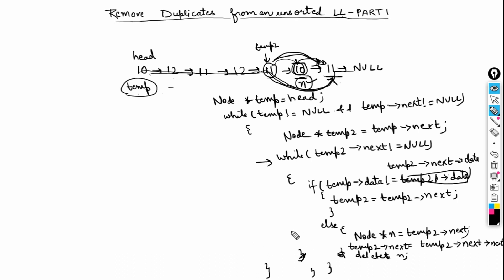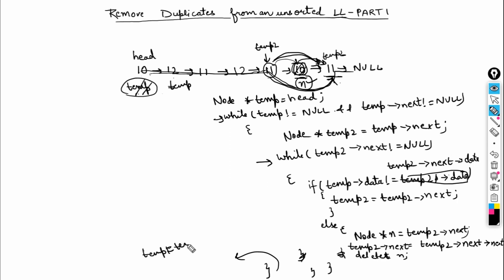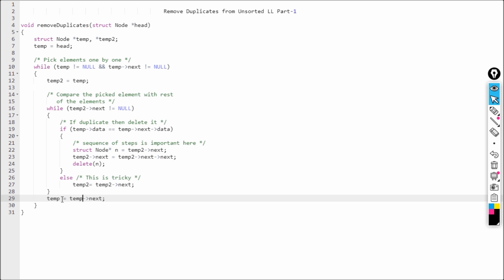So I maintain two pointers and iterate over the list, removing duplicate elements. When done, I do temp2 = temp2->next. Once temp2->next becomes null, I exit the inner loop. Then at the outer loop level, I do temp = temp->next to move to the next node. Let's discuss this with code.